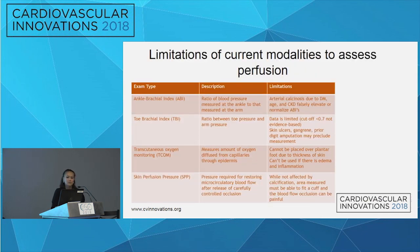A lot of these challenges stem from limitations of our current modalities for assessing perfusion. ABIs can be falsely elevated — in this case due to diabetes, age, and CKD. TBIs have limited data; the cutoff of less than 0.7 is not evidence-based, and you can't do TBIs without healthy toes, and they don't help track healing. TCOMs are pretty good, but edema or inflammation can be limiting. Skin perfusion pressure has more data on microcirculatory blood flow, but blood occlusion can be painful.